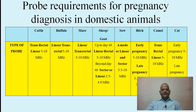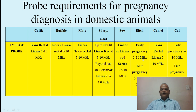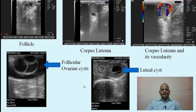Probe requirements for pregnancy diagnosis in domestic animals: a transrectal probe for cattle, buffalo, mare, and camel; a smaller transrectal probe for sheep and goats. For the sow, for pregnancy diagnosis beyond day 40, a transabdominal probe of 2.5 to 4 MHz is used. For early pregnancy or visualizing the uterus and ovaries of non-pregnant animals, a probe higher than 10 to 12 MHz frequency is required. For late pregnancy, a transabdominal probe of 3.5 to 4 MHz is used.